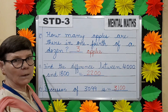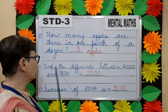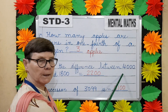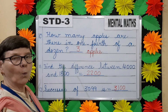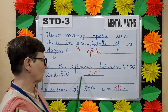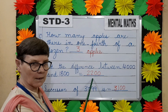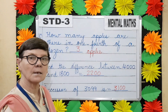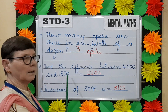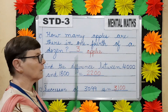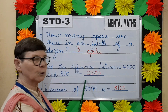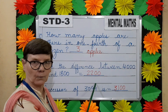Question number eleven. Find the difference between four thousand and one thousand eight hundred — equals dash. Difference means subtract. Subtract one thousand eight hundred from four thousand — we get two thousand two hundred.